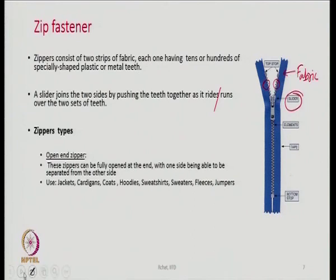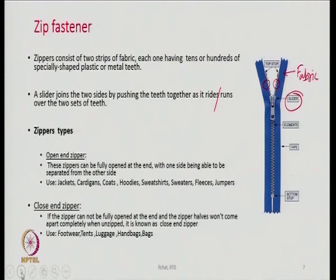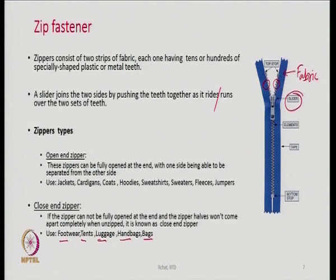The other zipper type is the closed-end zipper — the zipper cannot be fully opened at the end and the two halves will not come apart completely when unzipped. They are used in footwear, tents, luggage, handbags, and bags. There are many types of zippers and depending upon the end use, the type of zipper chosen can change. This lecture gives a glimpse of the various fastening devices in use in textiles; details will be available in standard textbooks.